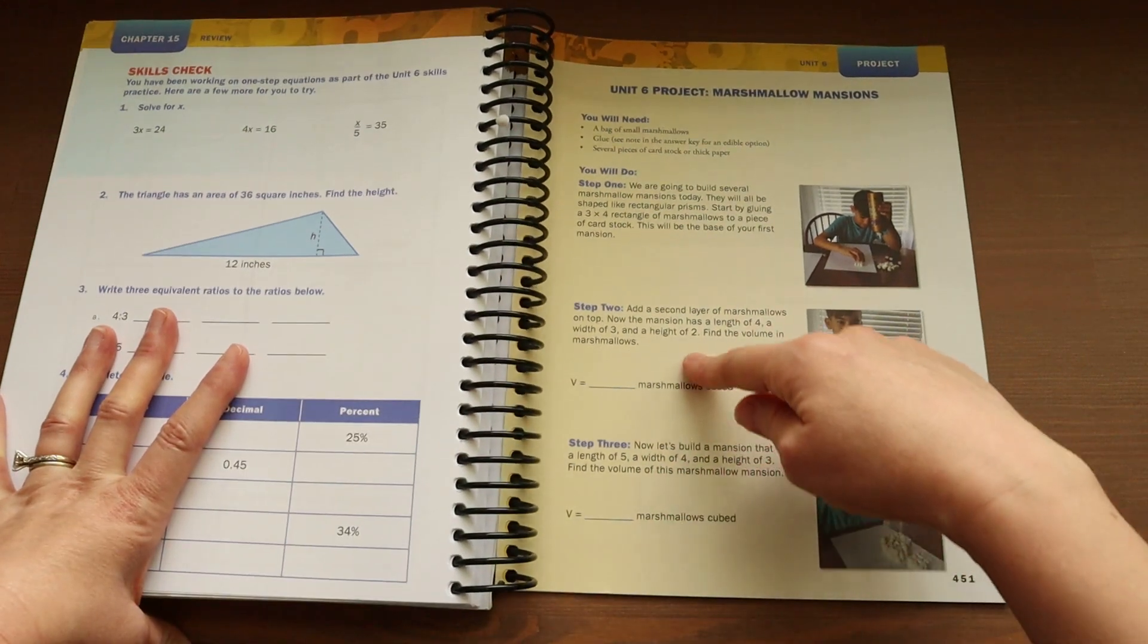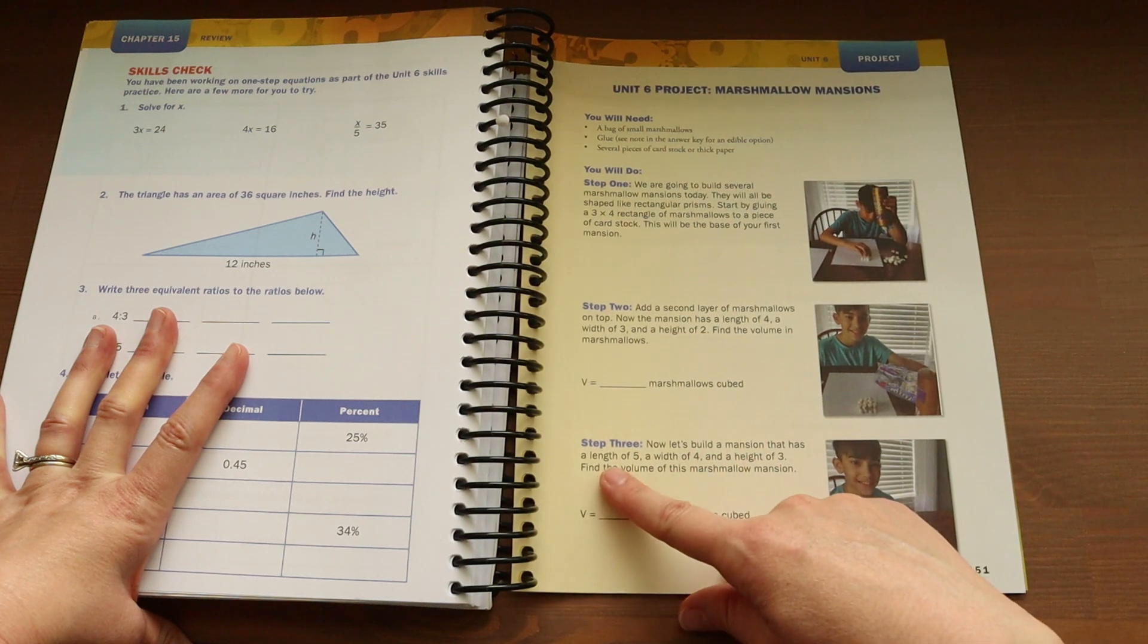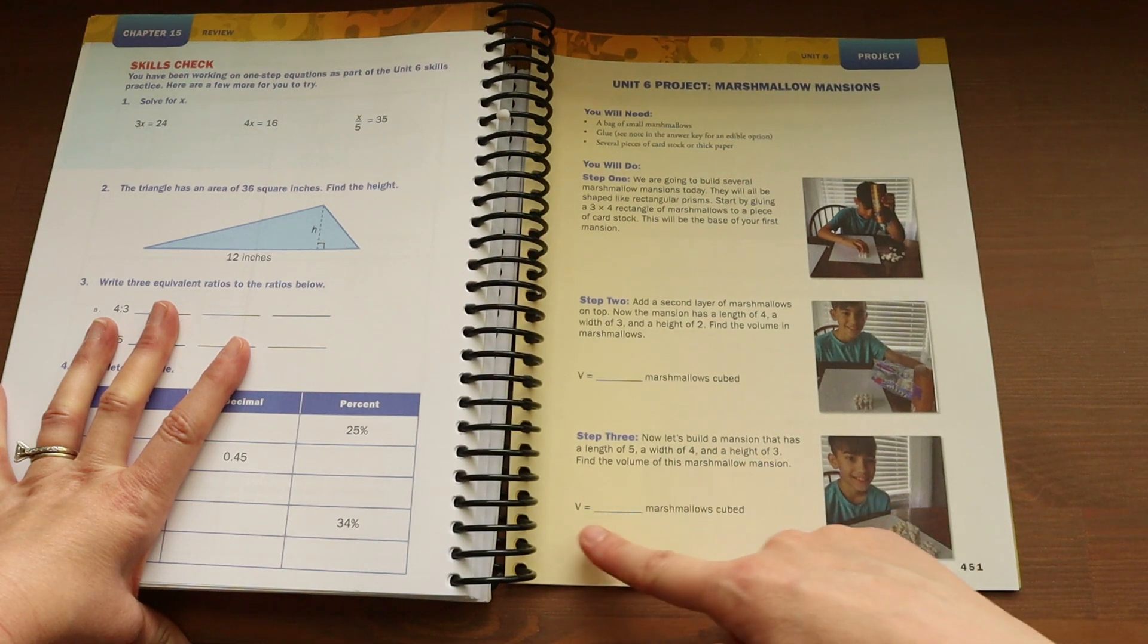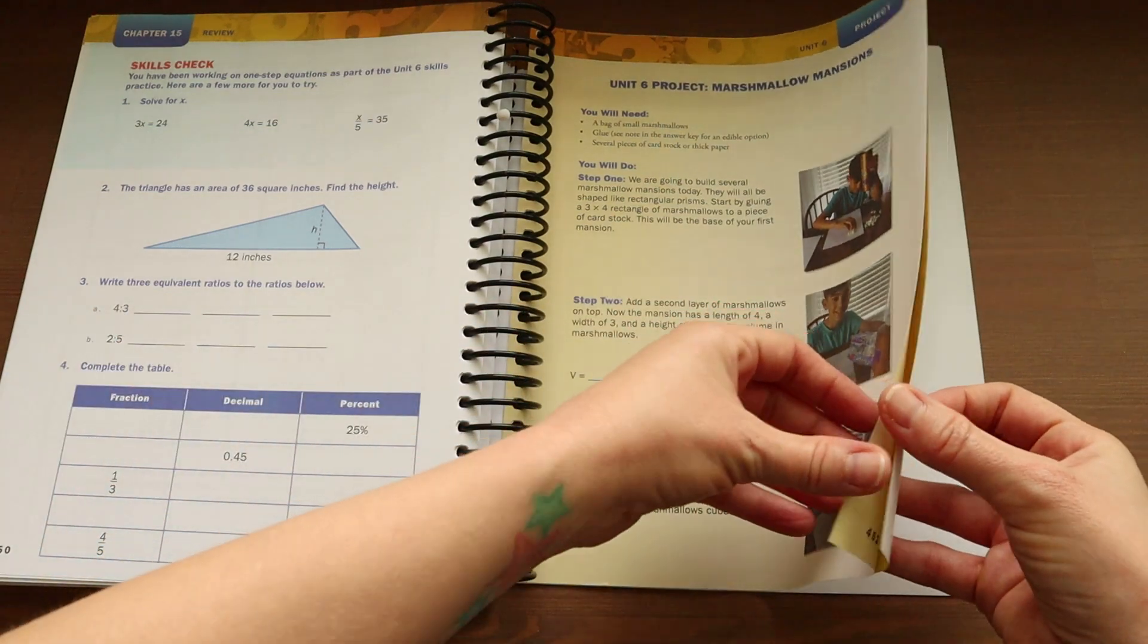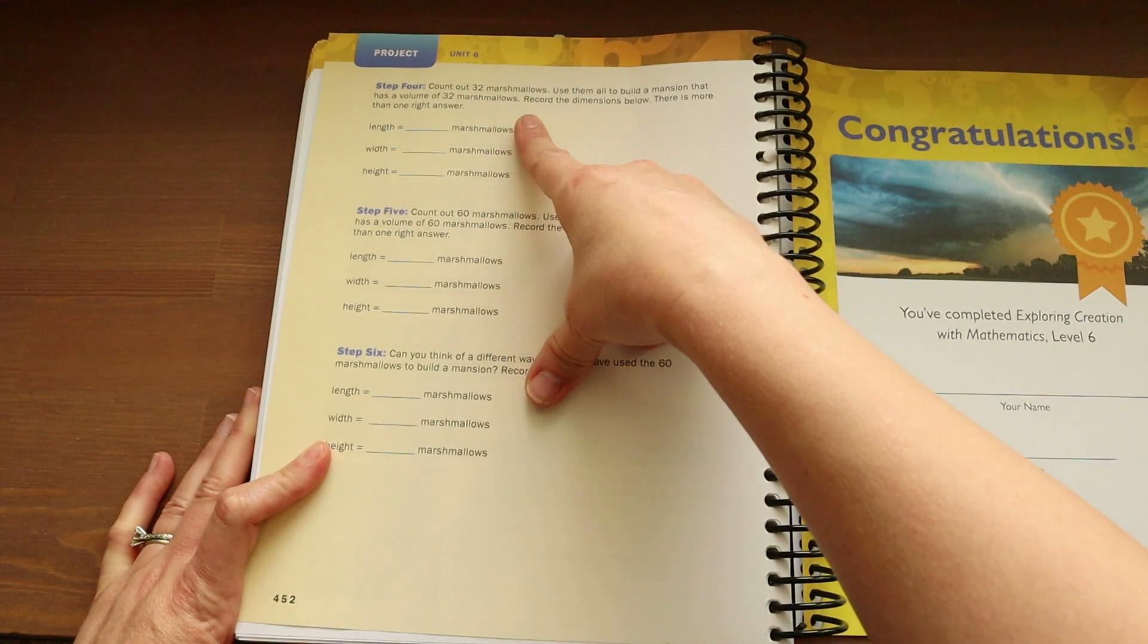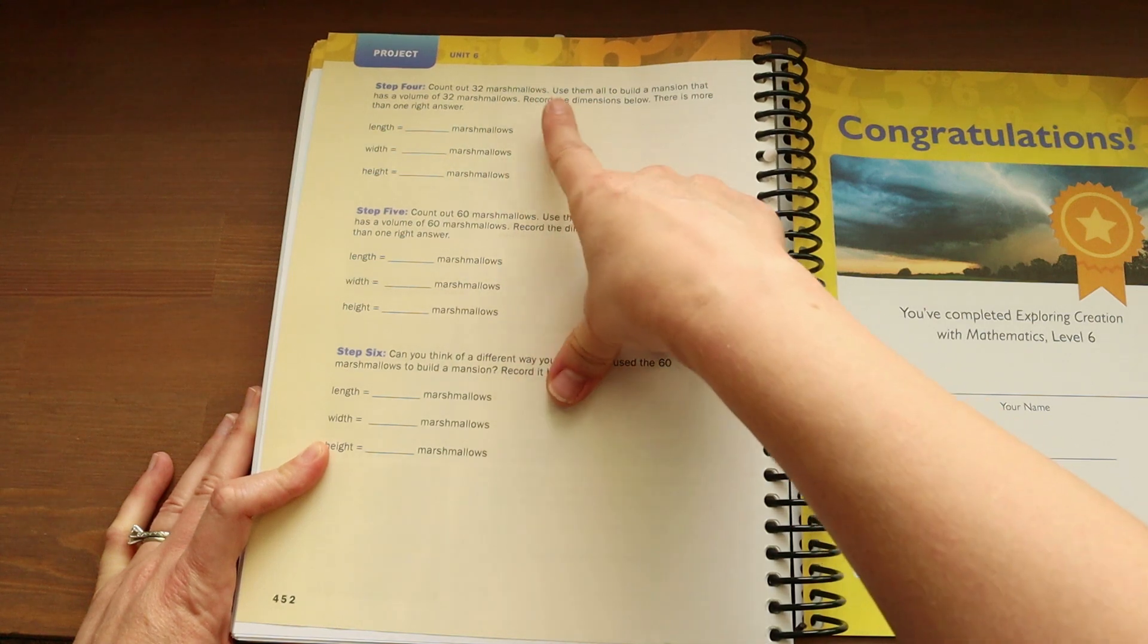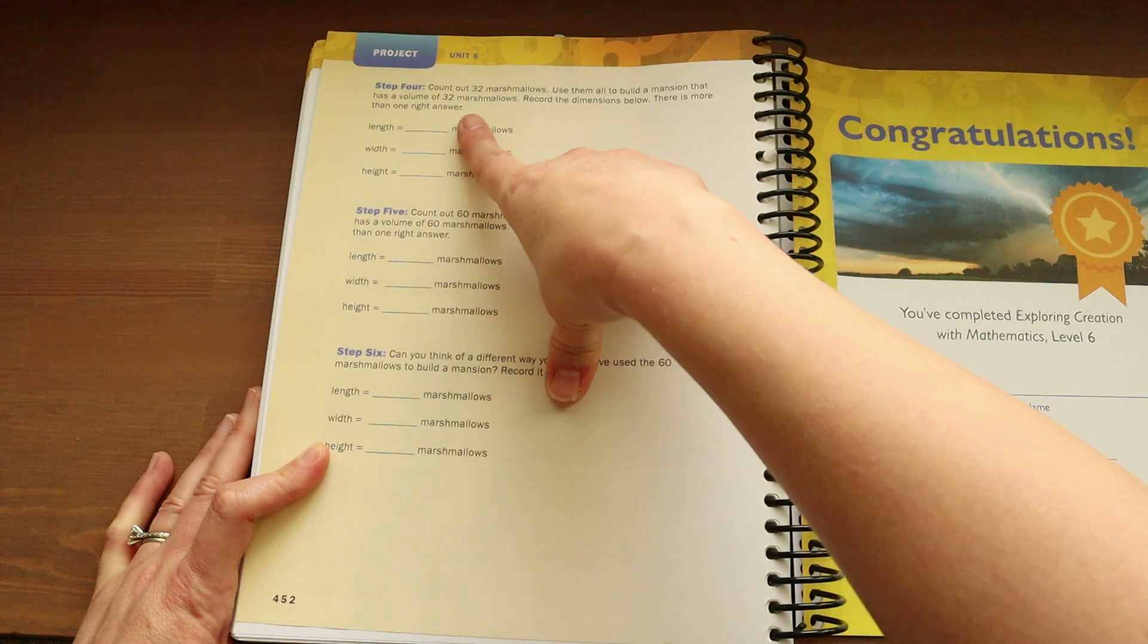And then once they get to step three, they will build a mansion that has a length of five, a width of four, and a height of three. And then from there, they will find the volume of the marshmallows cubed. Stage four, they will work in 32 marshmallows. They will use them to build a mansion that has a volume of 32 marshmallows. Record the dimensions below. There is more than one right answer.